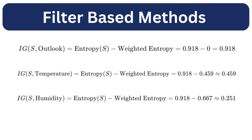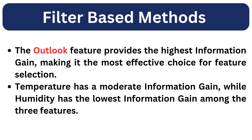We repeat the same process for each feature. Now we have the information gain for all features. We can see that outlook has the highest information gain, making it the most effective choice for feature selection. Temperature has a moderate information gain, while humidity has the lowest. Based on the information gain values, we can decide the top K features to be selected for our model.